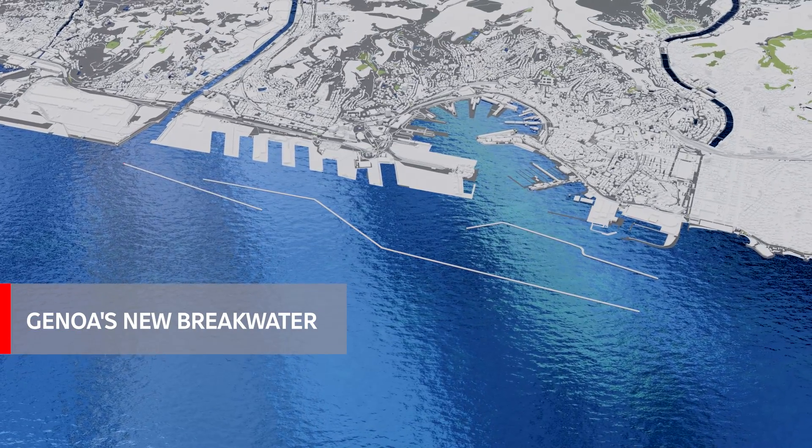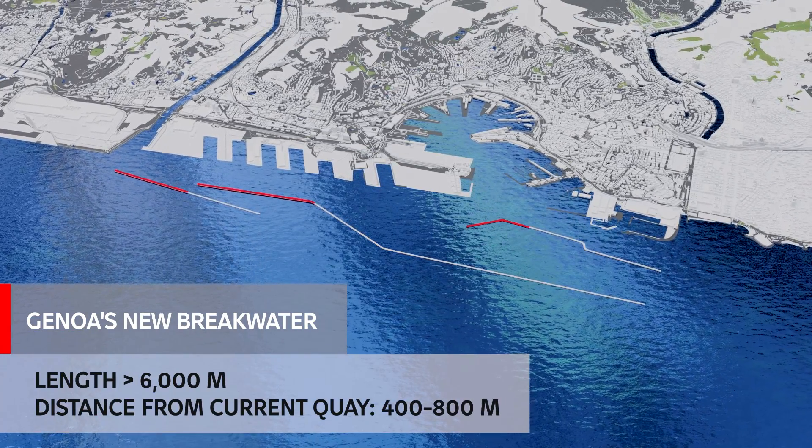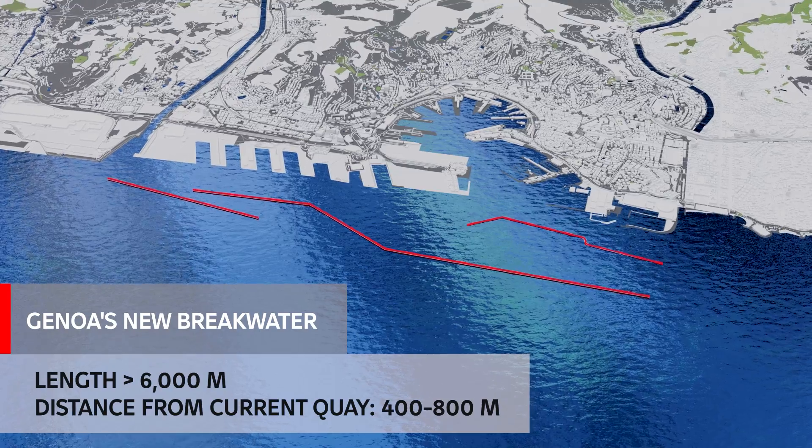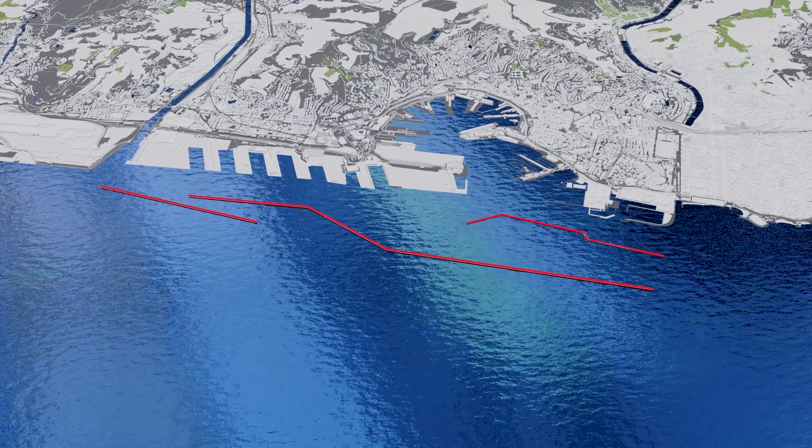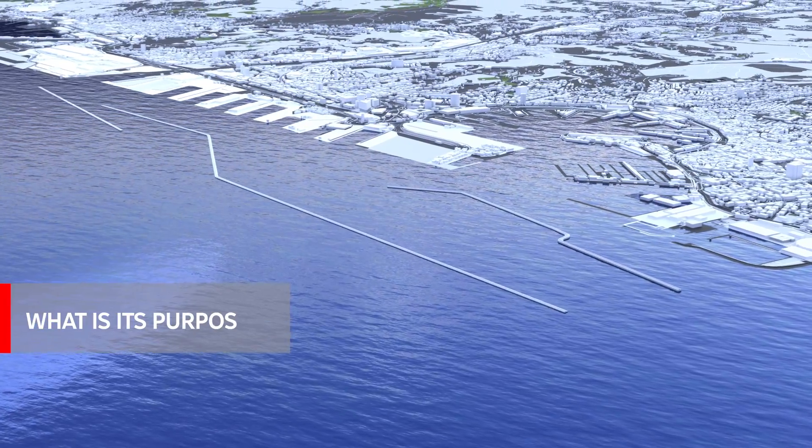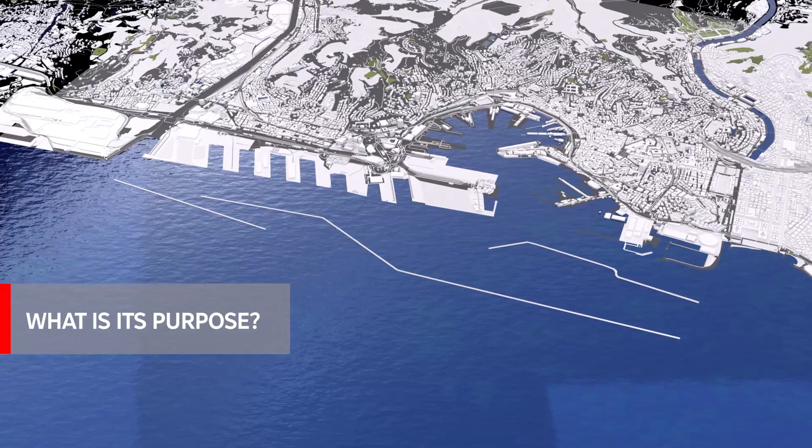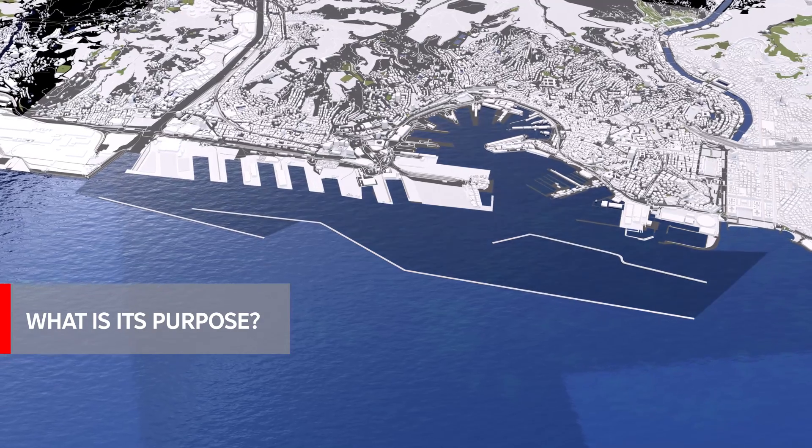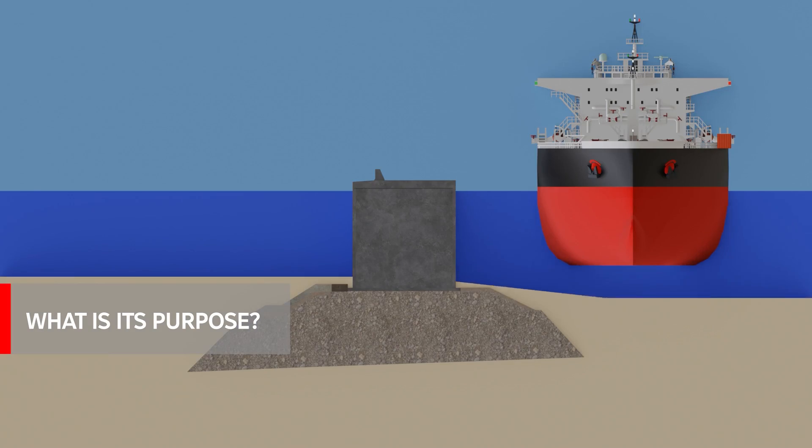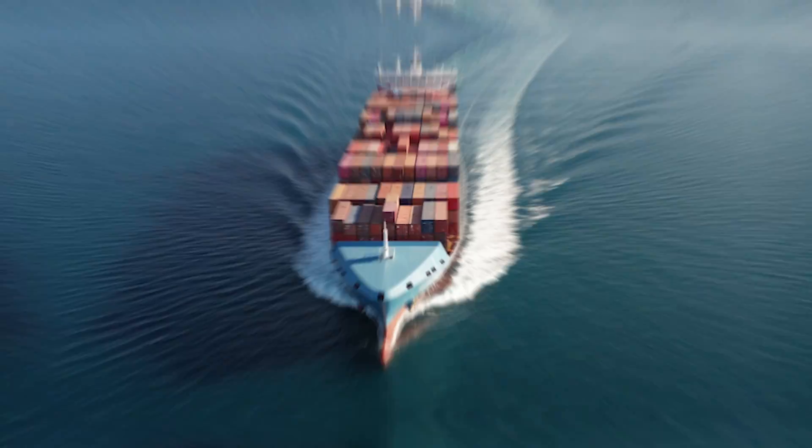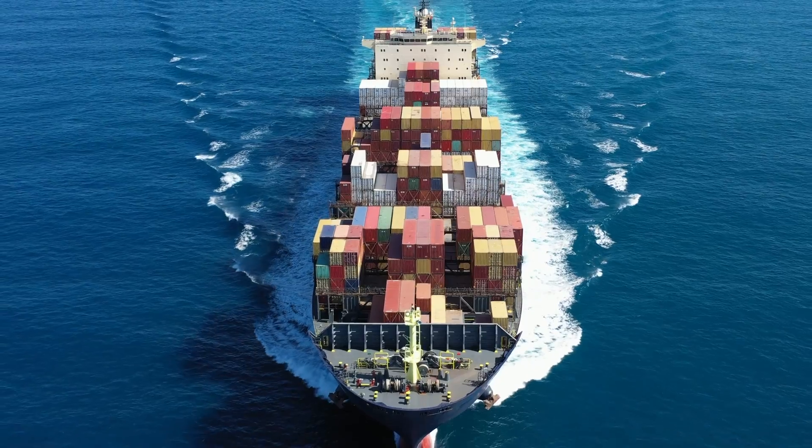Genoa's new breakwater is a structure approximately 6,000 meters long and about 400 to 800 meters offshore from the current quays. Its purpose is reducing the port's sea wave agitation, expanding the harbor area and ensuring a navigable channel up to 18.5 meters deep capable of hosting new generation cargo ships up to 400 meters long.